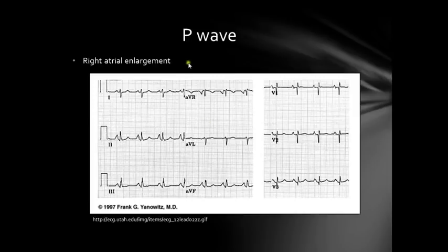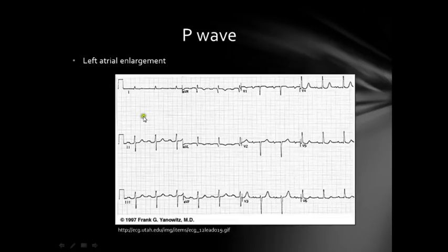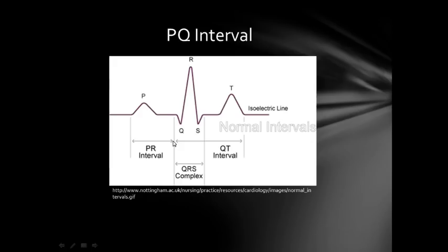Here is an example of right atrial enlargement — look at lead 2, the P wave is very large. This is left atrial enlargement — again, look at lead 2; you can see the P wave looks like an M here and also here. So this is left atrial enlargement.